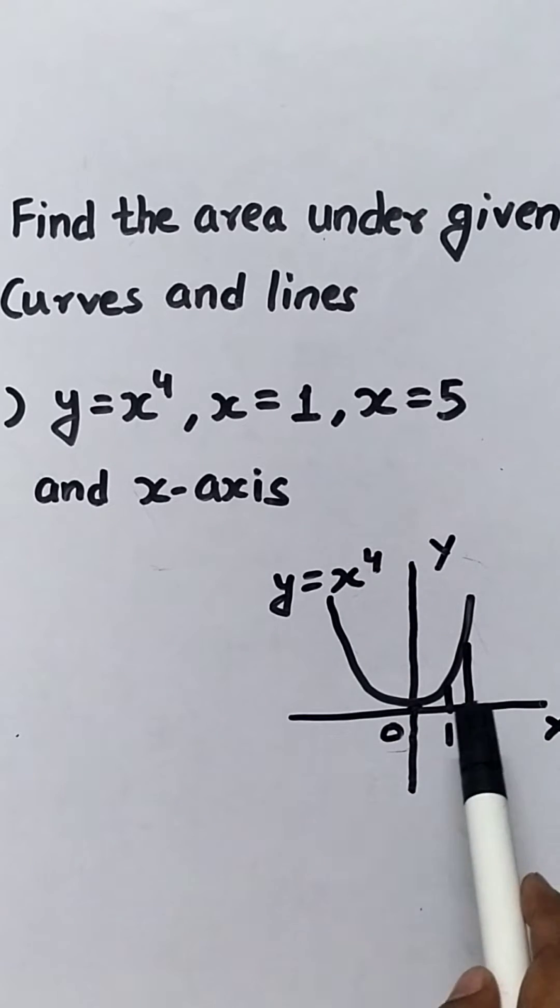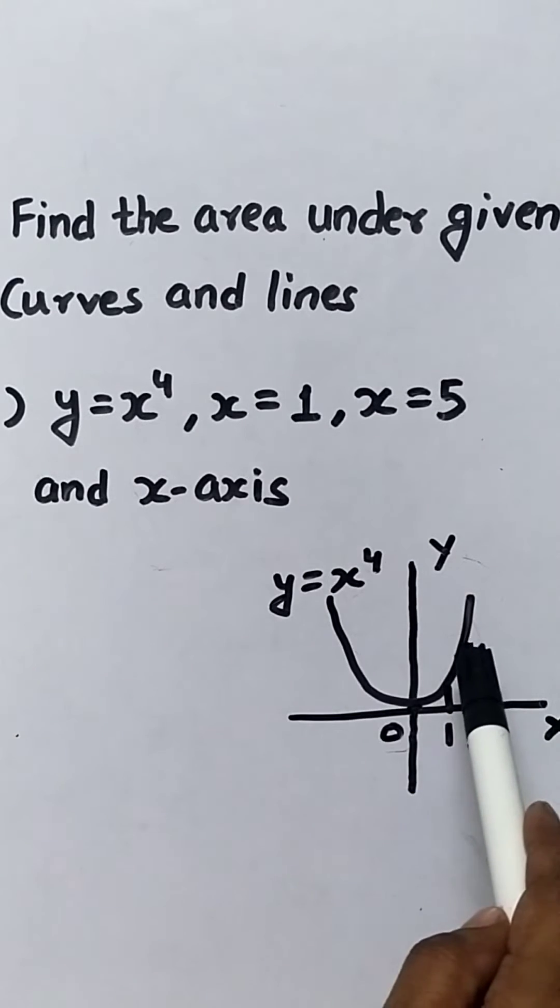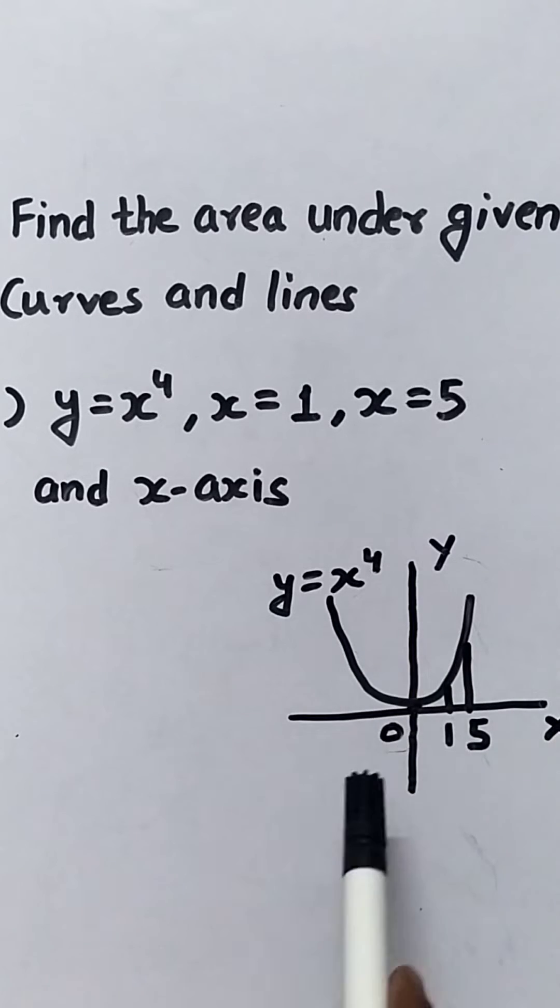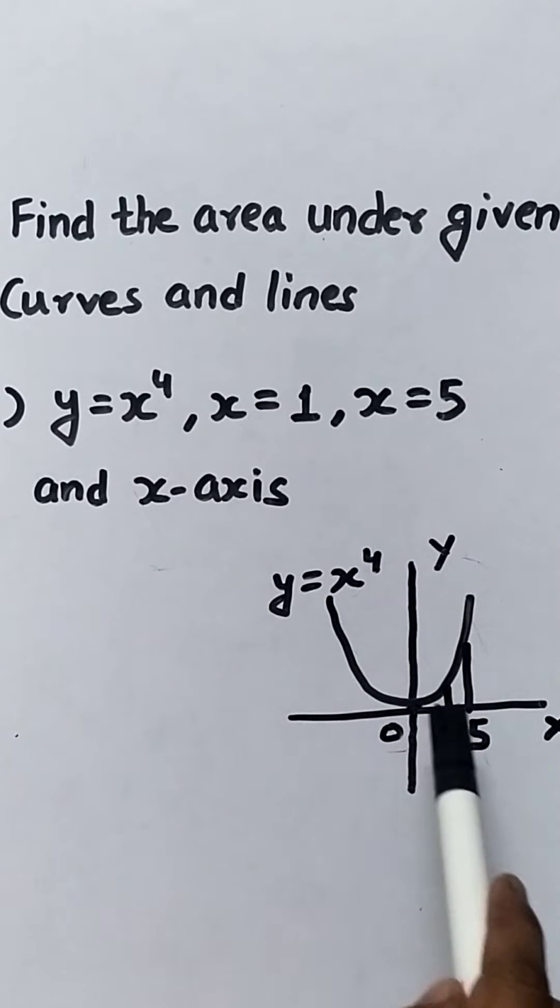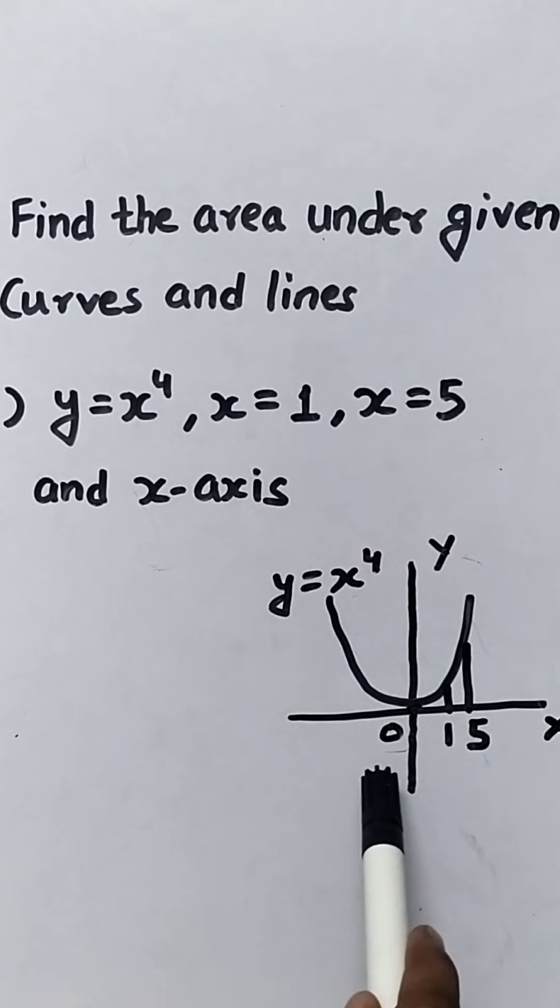Here I have drawn a figure. This is y equals to x^4. It is a parabola, upper parabola. Here x is even, so the given curve is symmetrical about y-axis and it passes from origin (0,0) here.